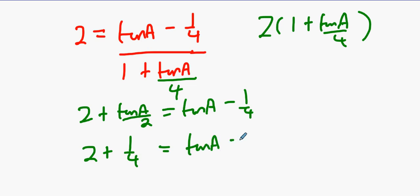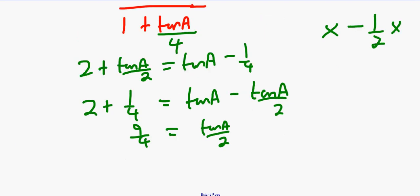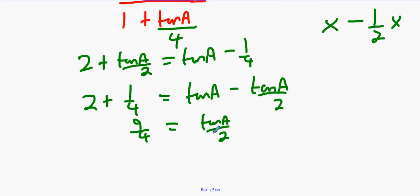That's nine quarters or 2 and one quarter. What's tan A take away a half tan A? Half tan A. And what can I do with that 2? It's multiplication division on the right, which means 2 times 9 over 4 times 1 over 2. There's your value of tan A.